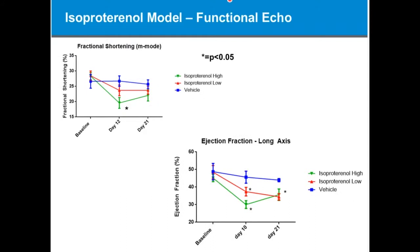When we look at some of the results in our study, looking at fractional shortening, we could see a really nice response in the high dose of isoproterenol. We do see a dose-dependent effect at both day 12 and day 21. A high dose of isoproterenol compared to vehicle was statistically significant, and we see a very significant drop of fractional shortening. Similarly, for ejection fraction in the long axis, we see a dose-dependent separation between the low and high dose versus vehicle that carries out throughout the study.